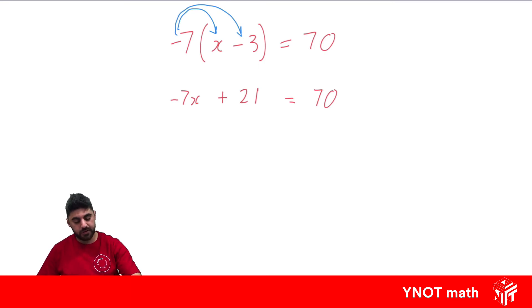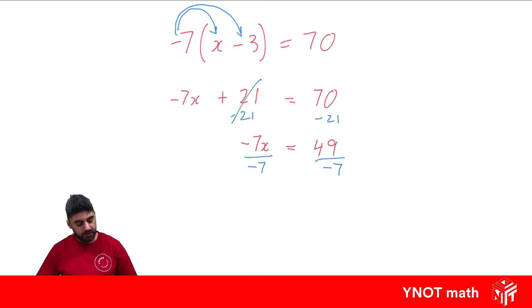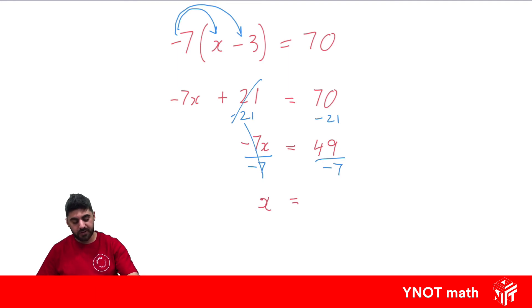Now we solve the two-step equation by minusing 21 from both sides, because 21 minus 21 gives us 0. We're left with negative 7x equals 49. Then we divide both sides by negative 7 to get x by itself. Negative 7 divided by negative 7 — negative divided by negative gives us a positive — so that leaves x. And 49 divided by negative 7: positive divided by negative gives us a negative, and 49 divided by 7 is 7, so our answer is negative 7.